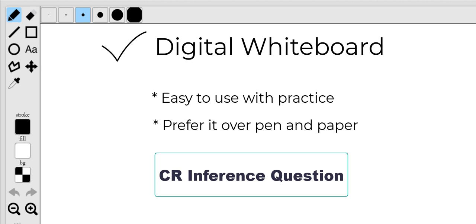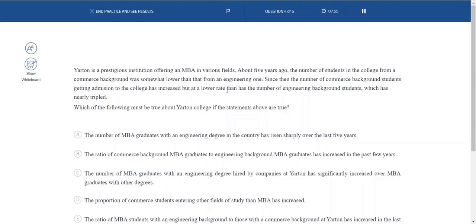And to demonstrate this, I'm going to take a classical inference question from critical reasoning and show you how to effectively use a whiteboard to solve an inference question. So let's do precisely that. Let's take an inference question. You can see this on the screen.